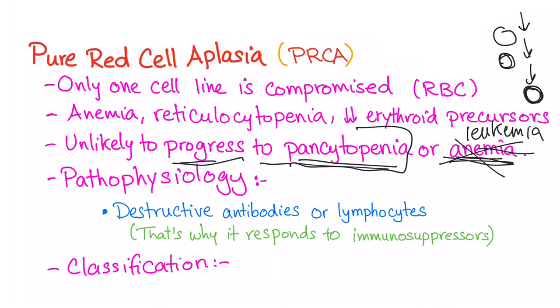Pathophysiology: there may be destructive antibodies or lymphocytes involved, which is why pure red cell aplasia responds very well to immunosuppressors. Keep that in mind.